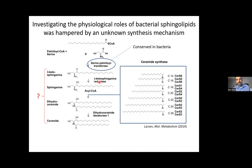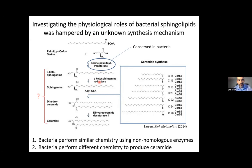We considered two possibilities for the potential mechanism. One is that bacteria do very similar chemistry, it's just that the enzymes diverged so long ago evolutionarily that the similarity is so low that a simple BLAST wouldn't find it. Possibility number two is that bacteria do something totally different and we don't know what that is.